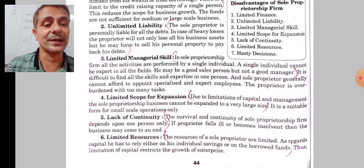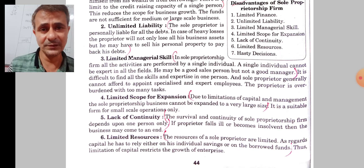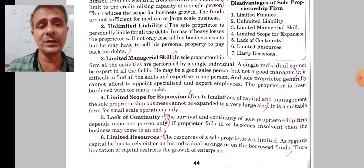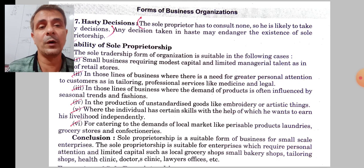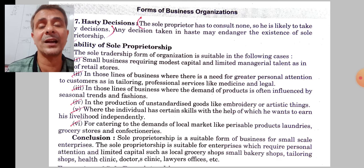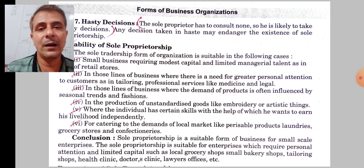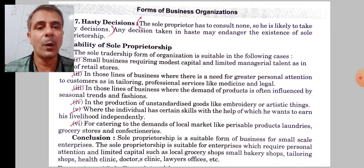Next is limited resources. The resources of this type of organization are limited in nature, since the owner has to put in capital from his own savings and by borrowing funds. Next is hasty decision-making. Since the owner is the only person to take decisions, sometimes in a hurry or under certain conditions, he may take decisions very fast, which may be hazardous for his own organization.